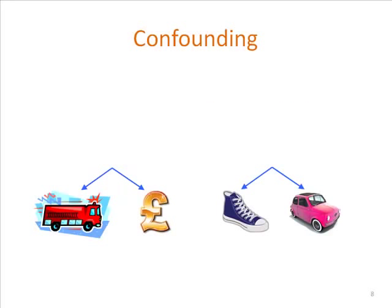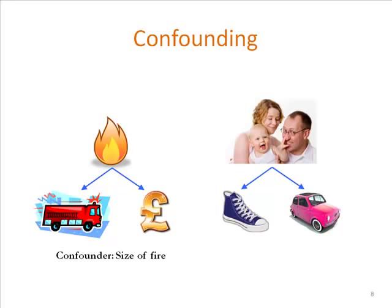Let's have another look at our examples — what might be potential confounders for these relationships? For shoe size and driving skill: height is a good one, but age is the better one. Babies have tiny little feet and are useless at driving. Adults have reasonably sized feet and varying levels of incompetence — but there is a big correlation there, so age is the confounder. For fire engines and fire damage: size of the fire. Big fires attract lots of fire engines and cause loads of damage.